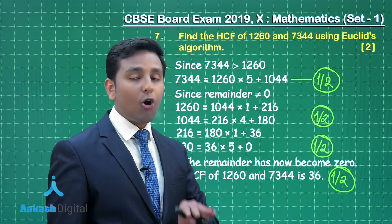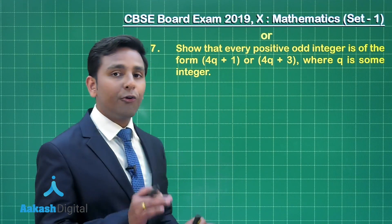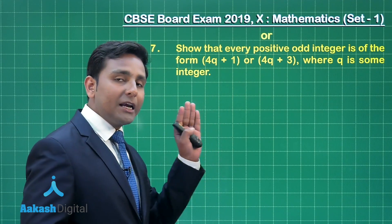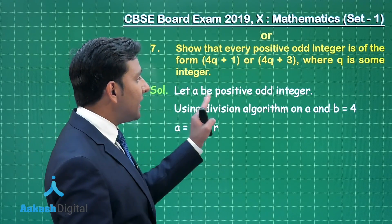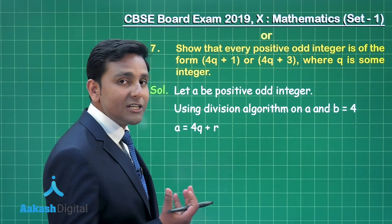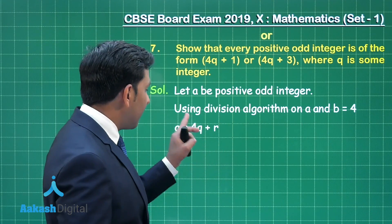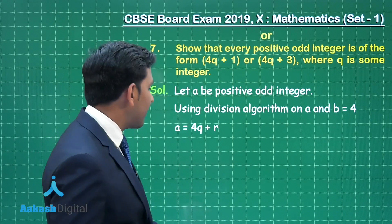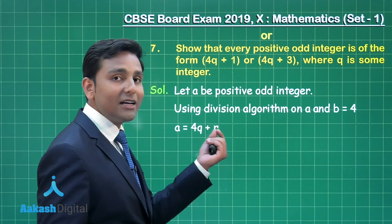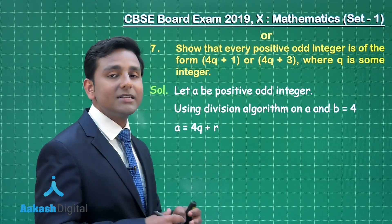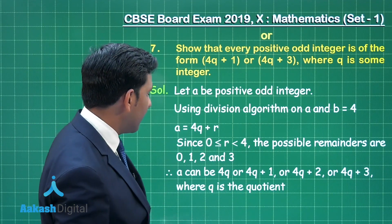Now the optional part: show that every positive odd integer is of the form 4Q plus 1 or 4Q plus 3, where Q is some integer. We consider A as a positive odd integer and apply Euclid's division lemma with B equal to 4, taking A as dividend, Q as quotient, and R as remainder, giving A equals 4Q plus R, where R is greater than or equal to 0 and less than 4.